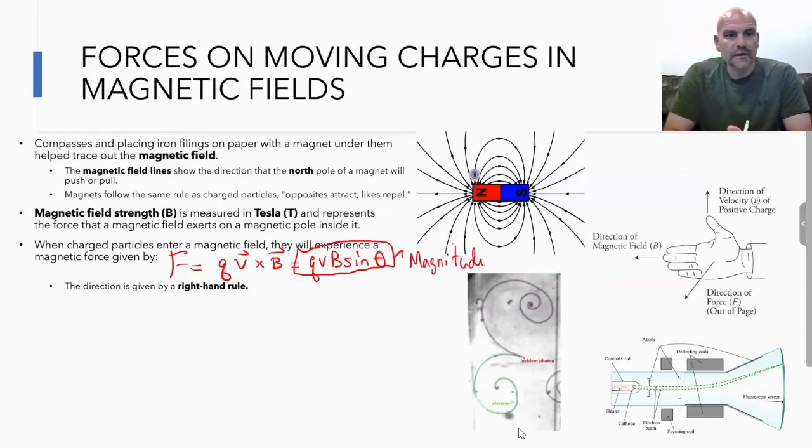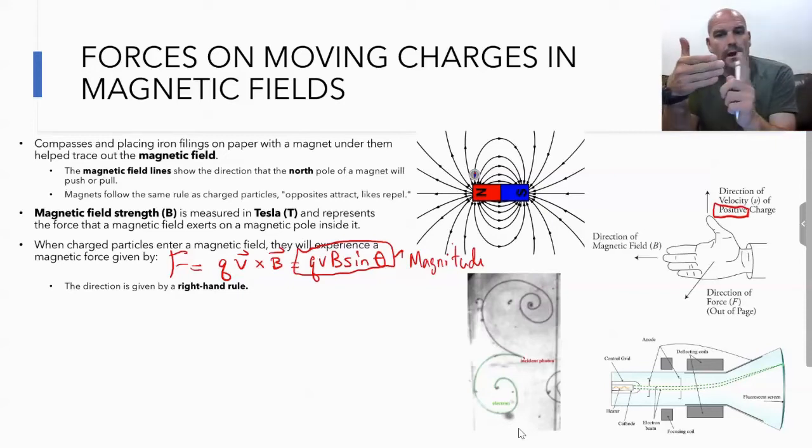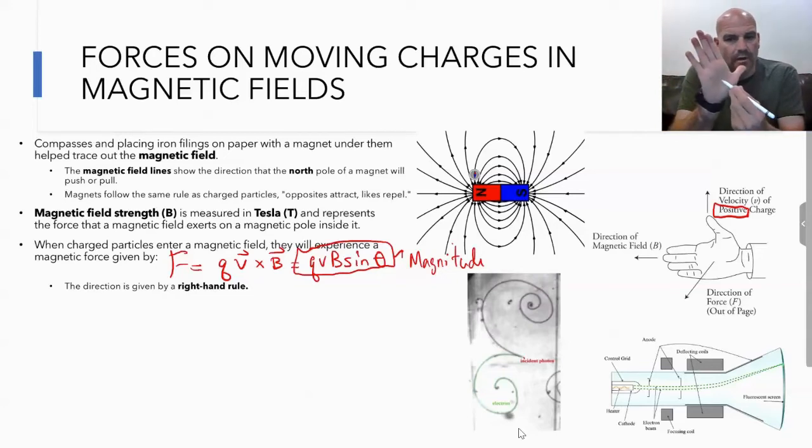The direction is going to be given by one of our many right-hand rules in the magnetic field unit. You can see the diagram here. We take our right hand and put our fingers up. Our thumb is going to point in the direction of the velocity of a positive charge. That's important, especially if your charge is negative. Our fingers represent the direction of the magnetic field, and then our palm is the force. So velocity, magnetic field, force.